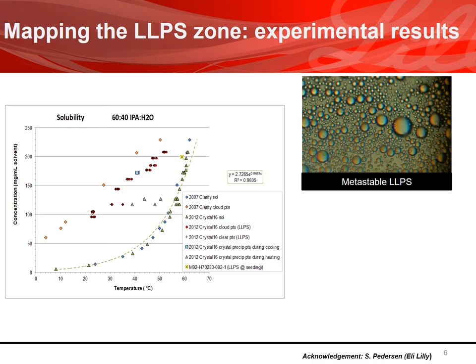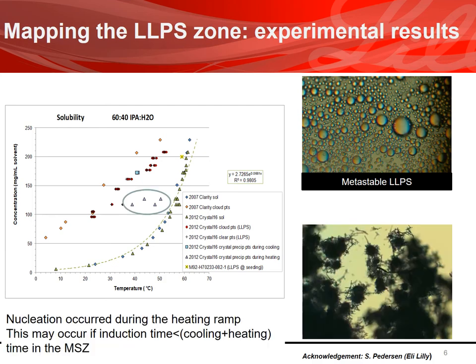This approach is applied at different concentrations. The phase diagram of Compound A in a 60:40 IPA-water mixture — water being the anti-solvent — shows oiling across the tested points. Some outliers occur during the heating ramp because an unstable LLPS forms where the oil droplets eventually crystallize, which can happen if the induction time for crystallization is lower than the time spent by the solution in the metastable zone during the cooling and heating ramp.